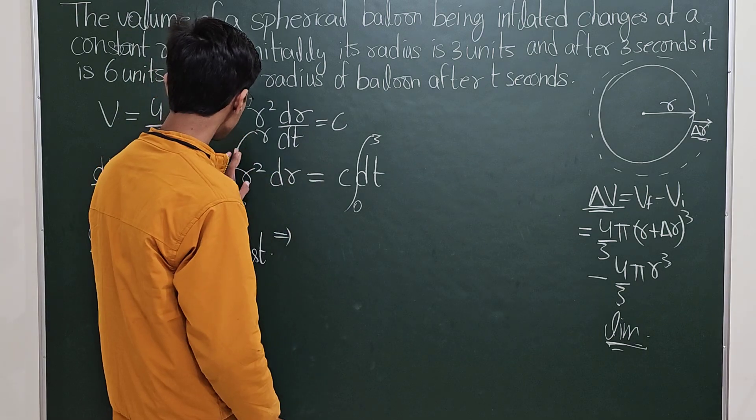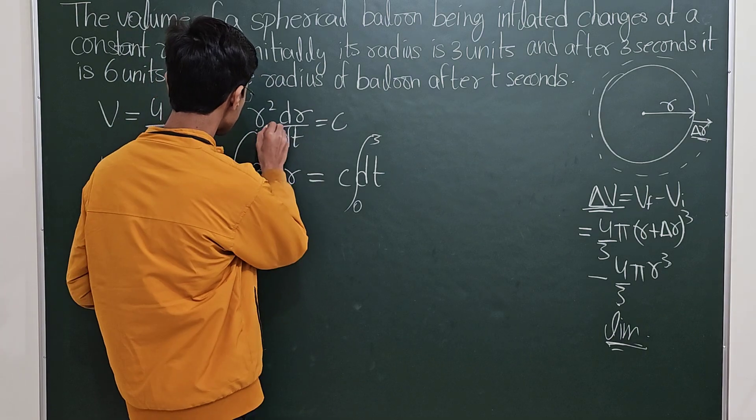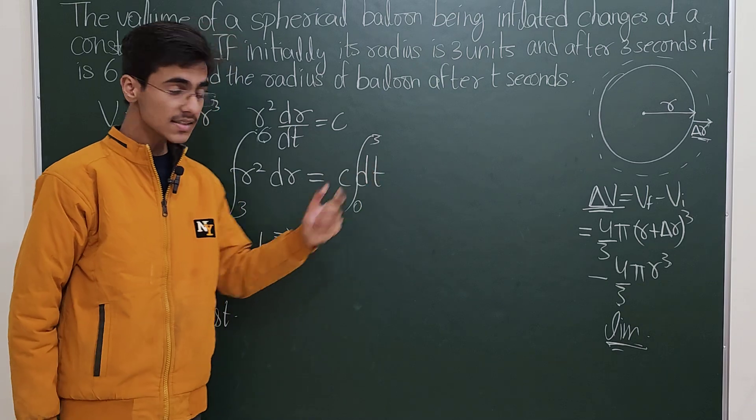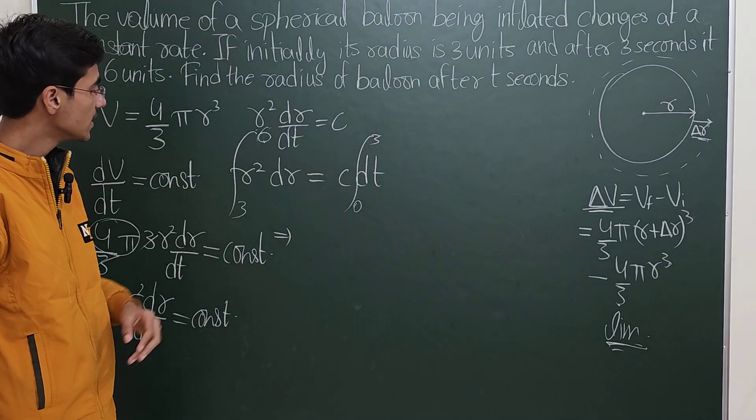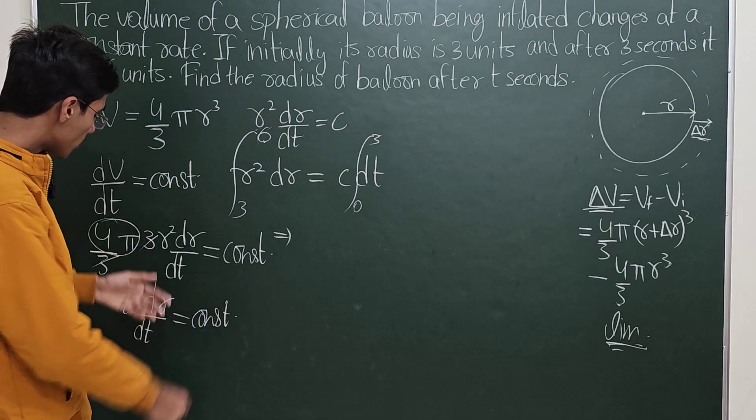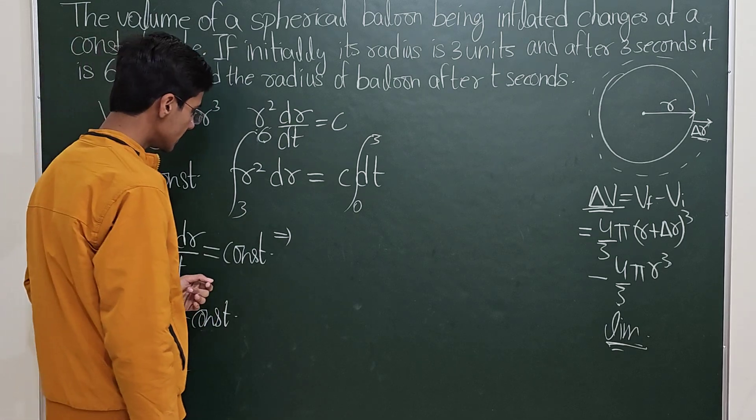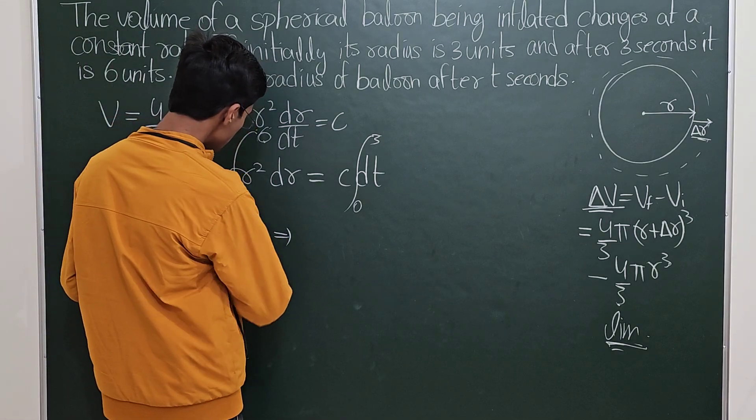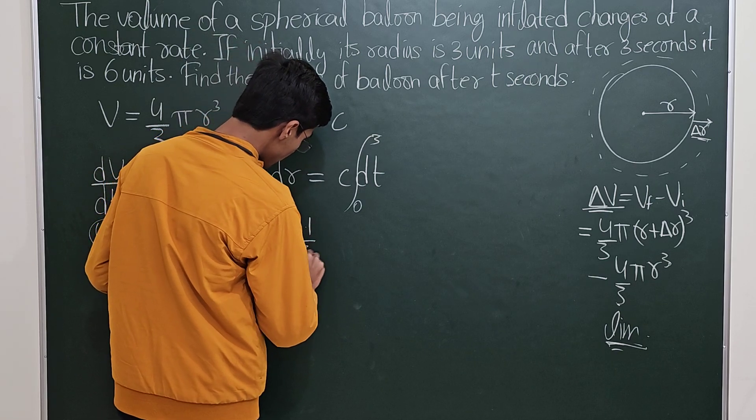You can just say this is 6. You see this will help me determine this constant, which basically tells you what is r² dr/dt.